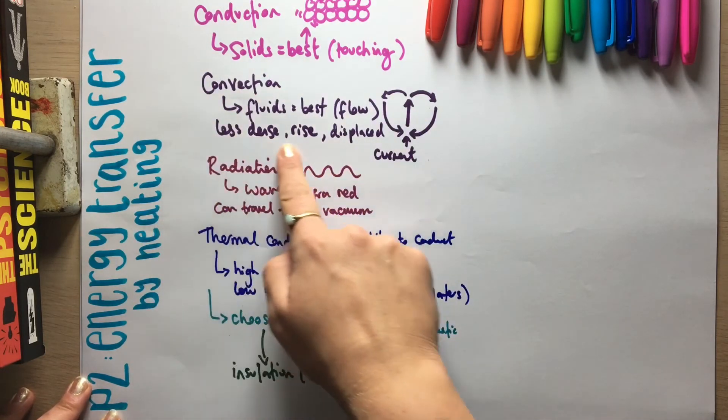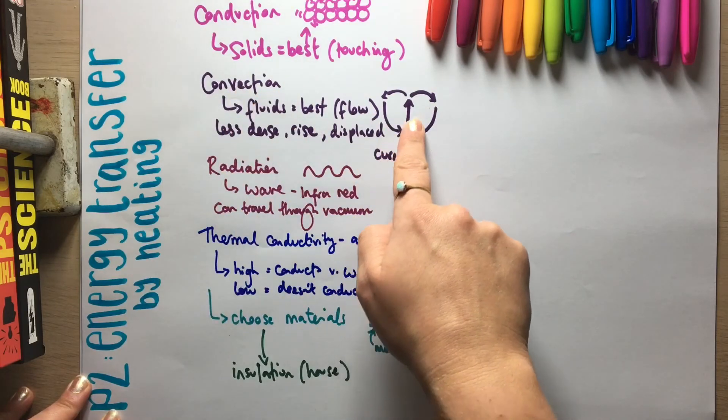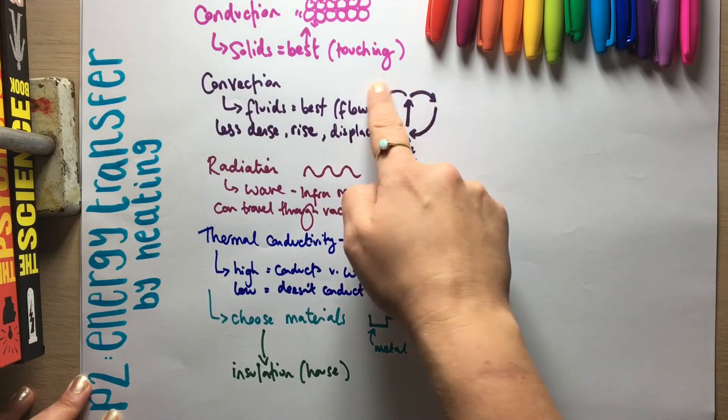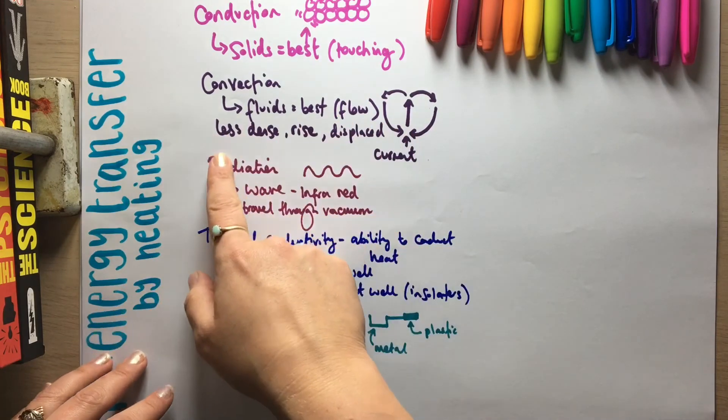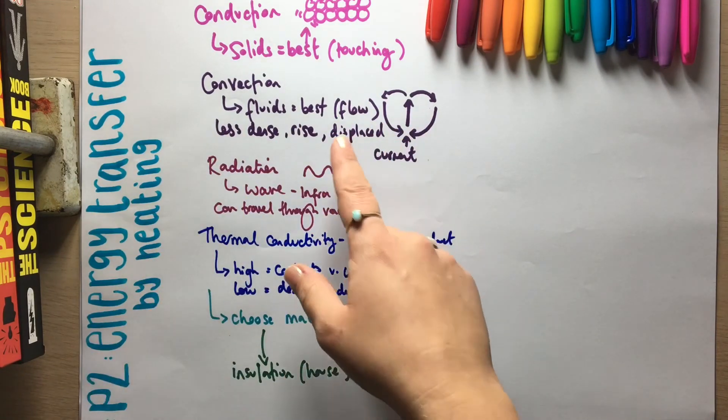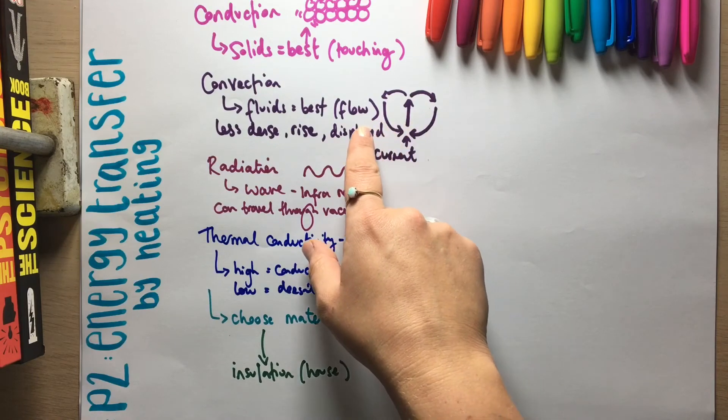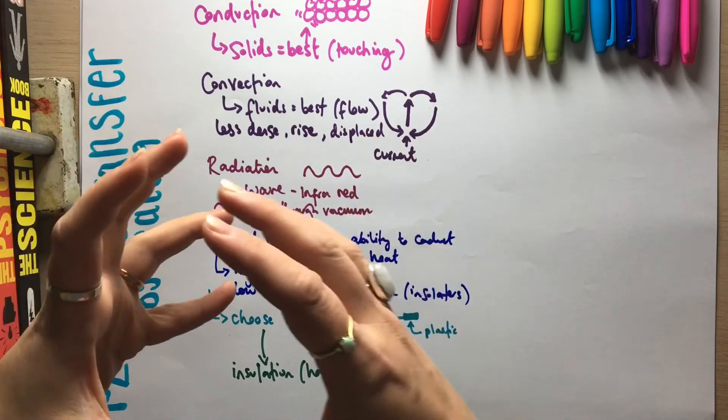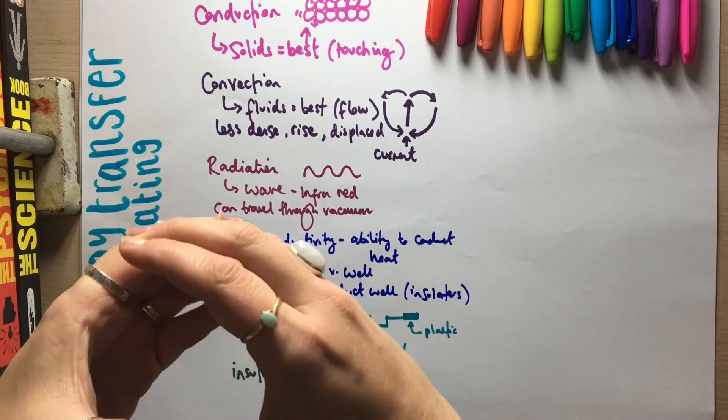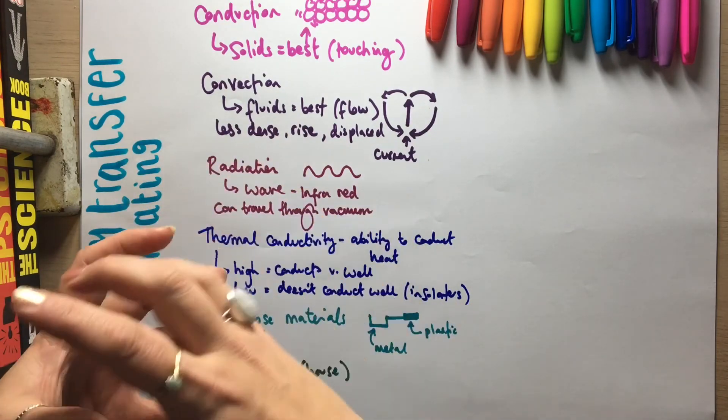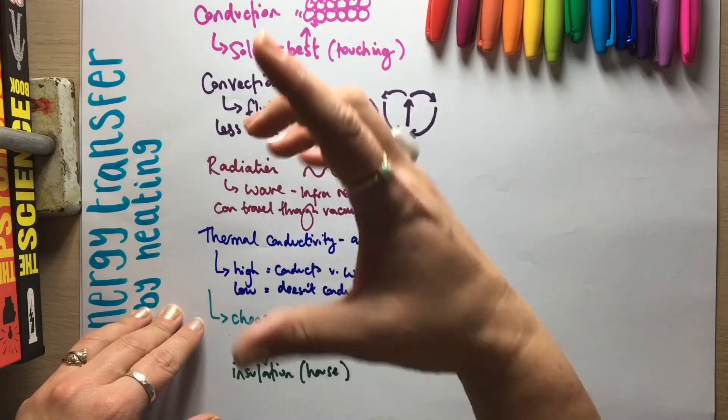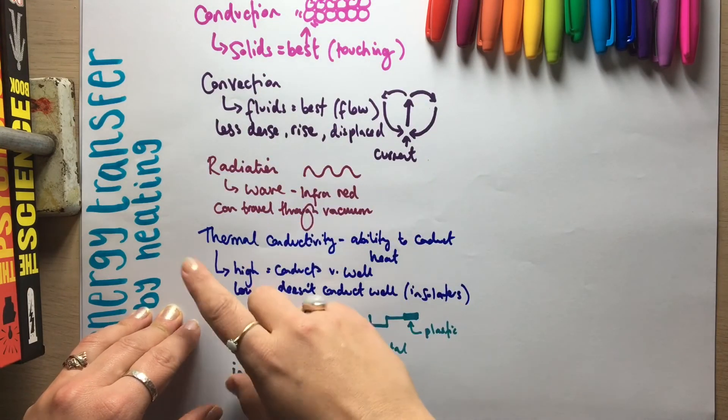Convection is where you want to stop air from being able to flow around. So you want to trap the air in a space. So this is where you have things like a foam. So a foam has lots of air pockets, so it traps the air in that space. So by having lots of air, you're reducing conduction because you've got a gas instead of a solid.